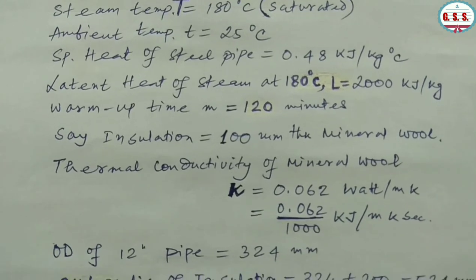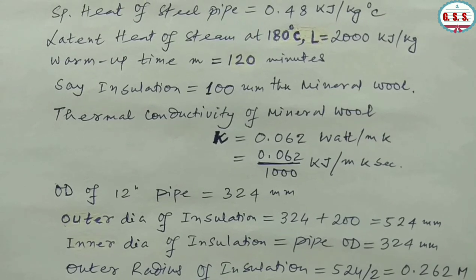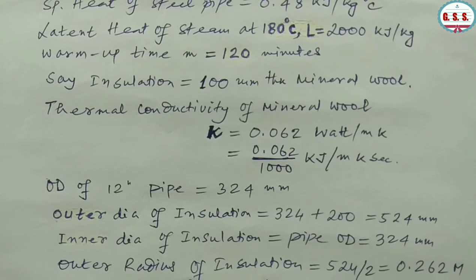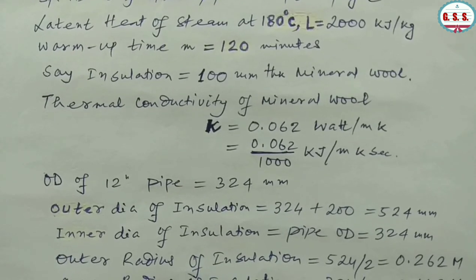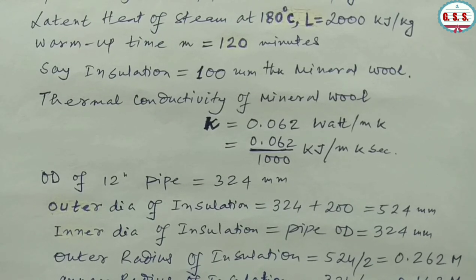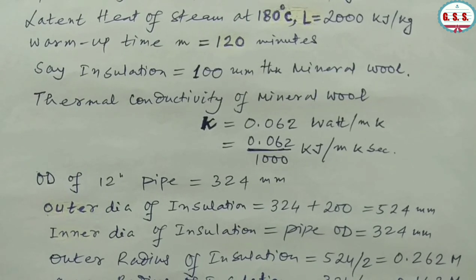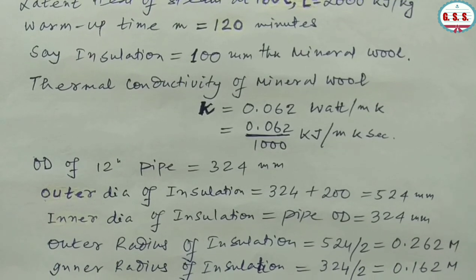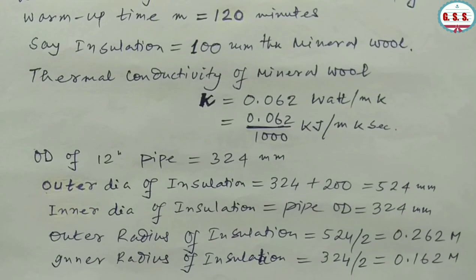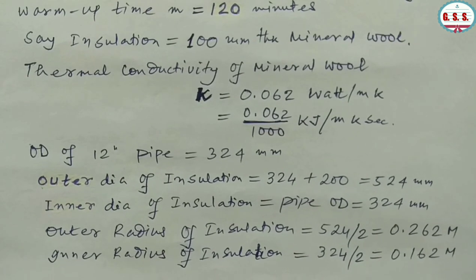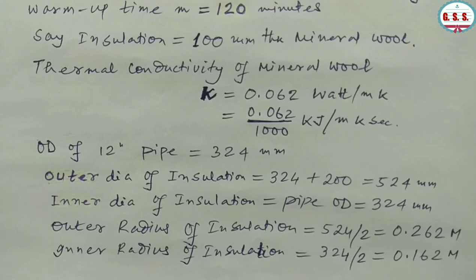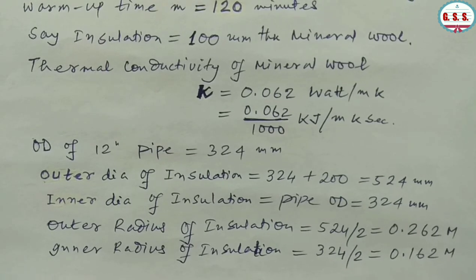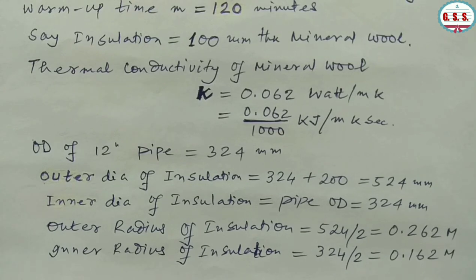Insulation thickness is 100 mm mineral wool. Thermal conductivity of mineral wool K = 0.062 W/(m·K), that is 0.062/1000 kJ/(m·K·s). Outer diameter of 12 inch pipe = 324 mm, so outer diameter of insulation = 524 mm. Inner diameter of insulation = 324 mm. Therefore, outer radius of insulation R0 = 0.262 m and inner radius of insulation Ri = 0.162 m.